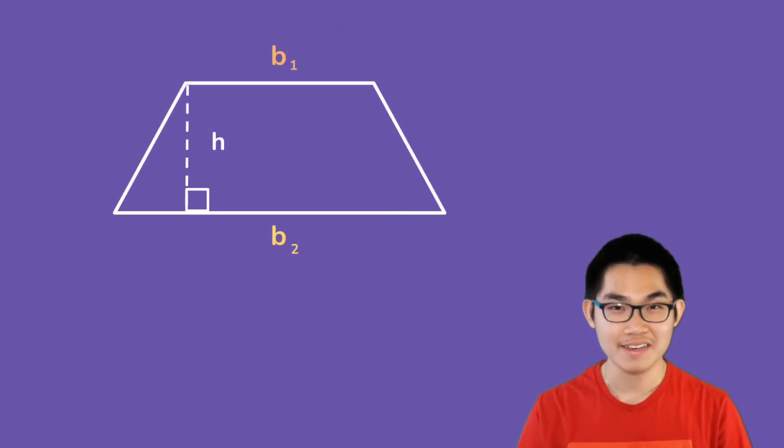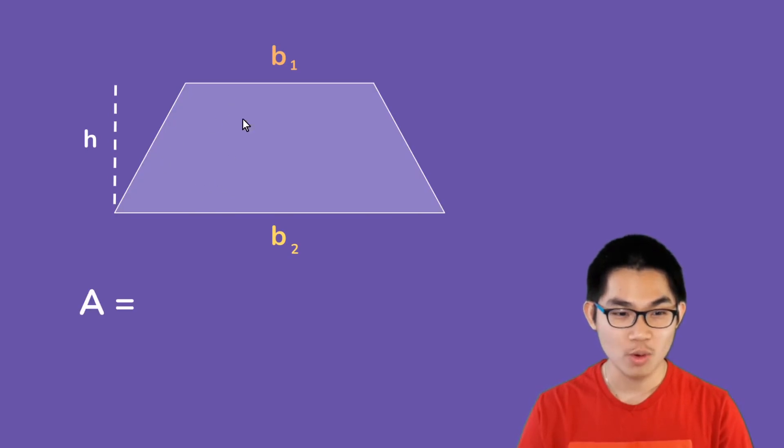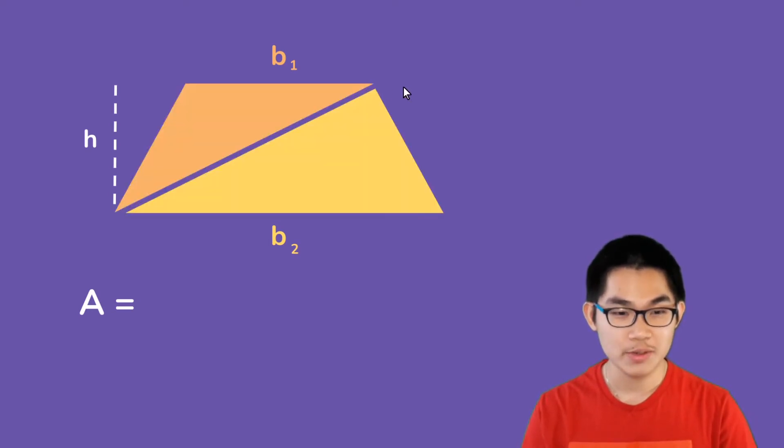So, where does the formula come from? Well, if you look at this trapezoid, when we say we want to find the area, we want to find all the space within this trapezoid. Now, if I split this trapezoid into two different shapes, what are these two? Well, these look like triangles, right? And so, the area of the trapezoid is the area of these two triangles added together.